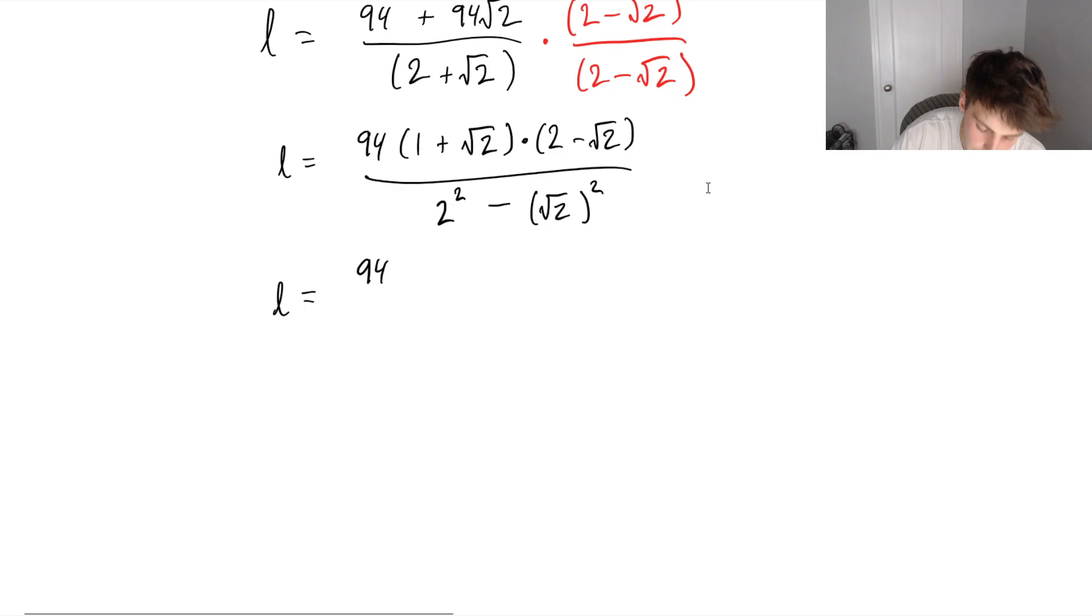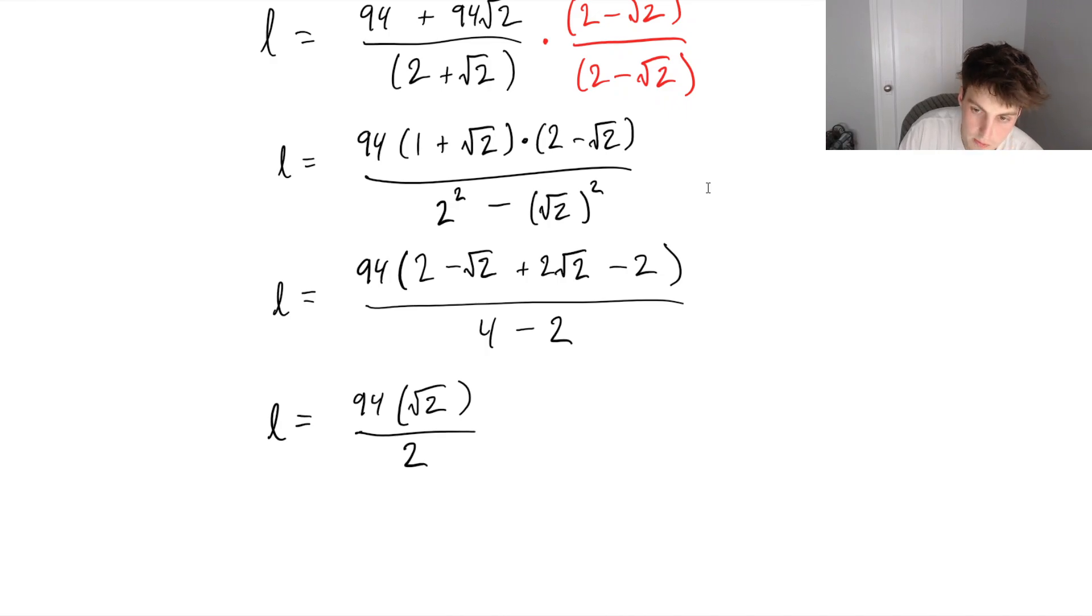So now we've got 94 times, now we can foil the top, the numerator, so we get one times two is two, one times negative square root two is minus root two, we now get plus two root two, and then we got plus root two times minus root two, we're left with minus two. All of this is divided by four minus two. Almost done here, we can see we've got 94 times, our twos cancel out and we are left with negative root two plus two root two, so that's just one root two, and this is divided by two.